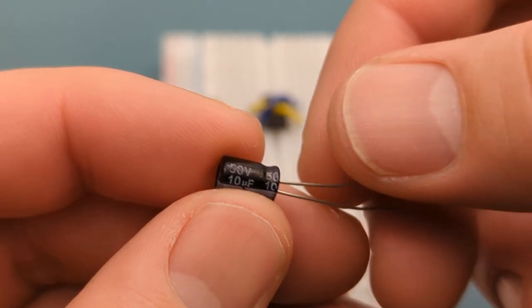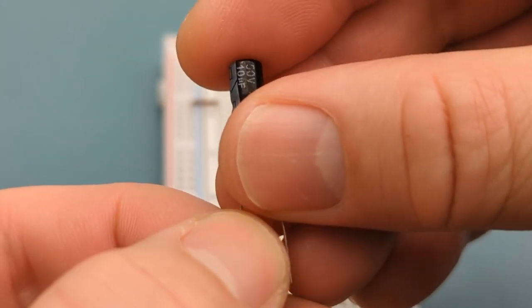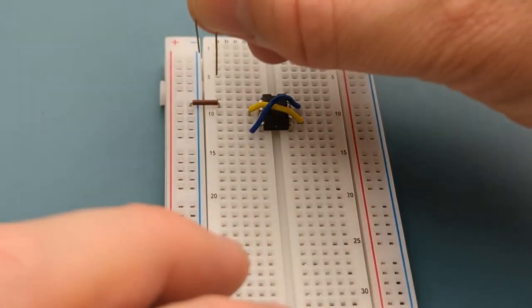Insert a 10 microfarad capacitor into pin 2 or trigger and the negative rail. Insert the shorter leg into the negative rail.